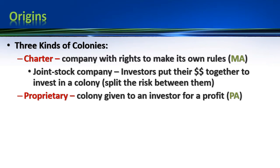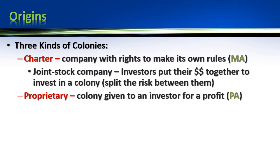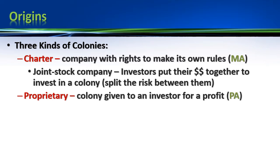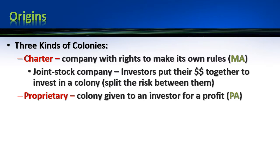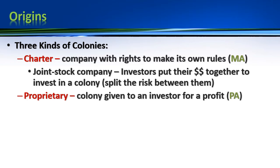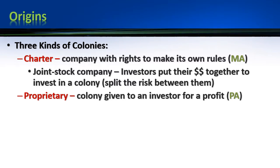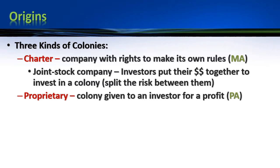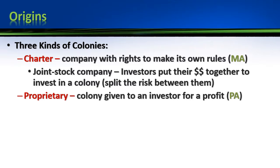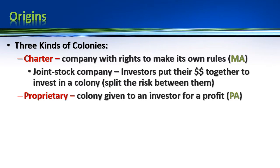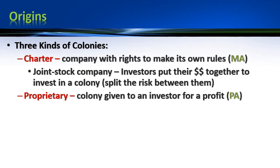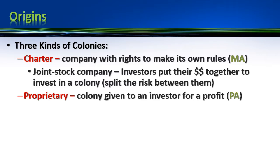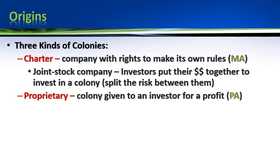Similar is a proprietary colony — a colony that's given to an investor or sometimes a group of investors in order to make a profit. A good example of this would be Pennsylvania, which was given to William Penn to do with as he pleased. He could set the colony up to make money, but also create a place for Quakers to practice their religion. North Carolina and South Carolina are also proprietary colonies, but they have eight investors — eight lords proprietors — who share the governing of the colony.